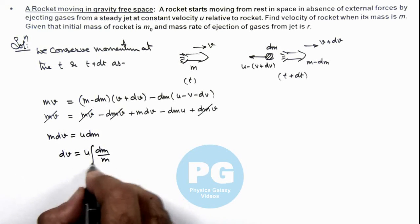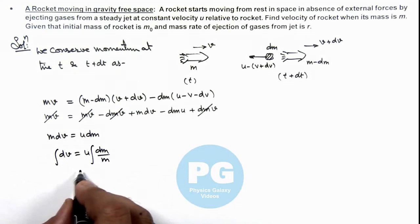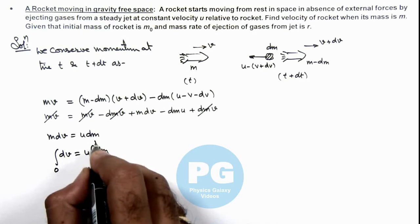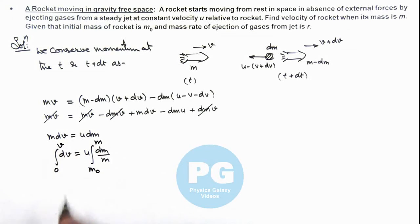And further if we integrate this expression when speed was zero mass of rocket was m₀, when it reduces to m the speed increases to v, so this gives us v equals u ln of m by m₀.